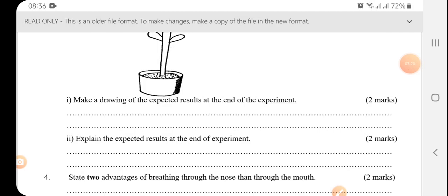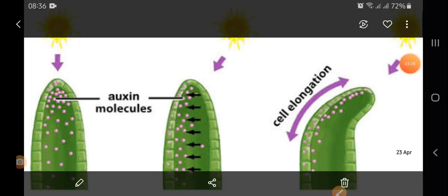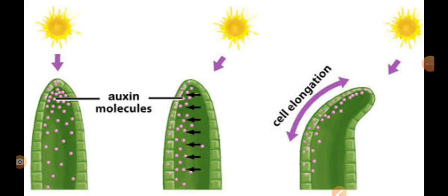Explain the expected results. Why do the shoot bend towards the light? Let me explain using a photo. So auxins are very sensitive to light. And since they're very sensitive to light, they will diffuse away from the source of light and move to the darker side. And auxins lead to growth. Therefore, the darker side will grow faster than the side that is well lit. And therefore, the shoot bends towards light as in the third picture.